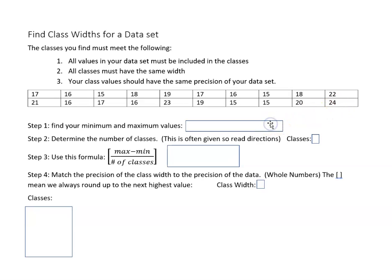We find those two values in our data set that might not be the first and last, but we still want to find those. Once we know those, we want to determine the number of classes that we want, and that's also often given in the directions, so read the directions. Your instructor might say use five classes or six or whatever. For this case, let's say that we want to use four classes.